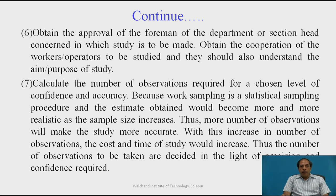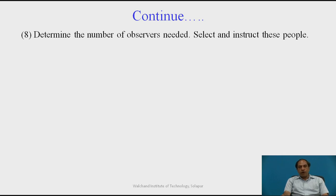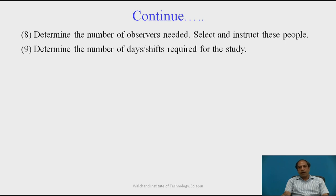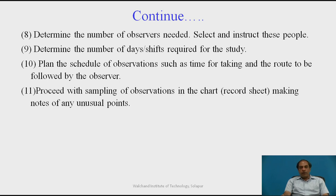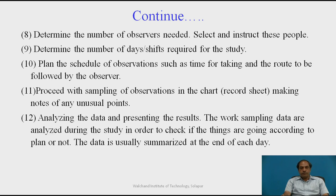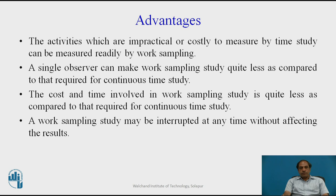More observations mean more accuracy, but cost also increases, so the number of observations is decided in light of the required confidence level. Once observations are finalized, select and instruct the people involved, determine the number of days or shifts required for the study, and plan the schedule of observations including the time for taking them and the route to be followed by the observer. Proceed with sampling, making note of any unusual points. The work sampling data are analyzed during the study to check if things are going according to plan, and data is usually summarized at the end of each day.